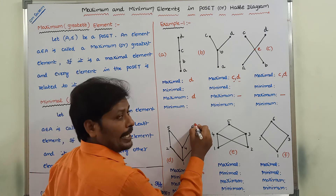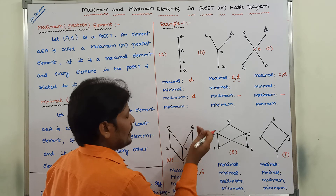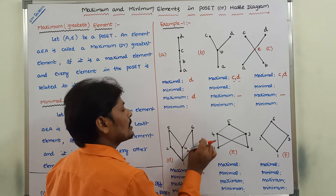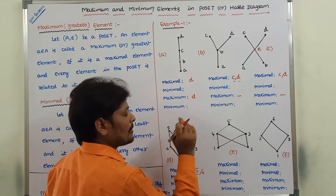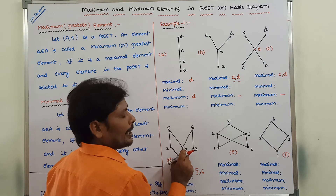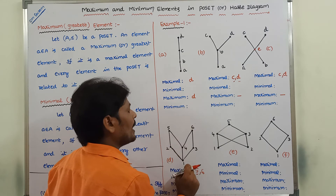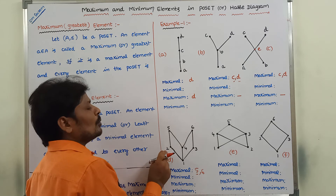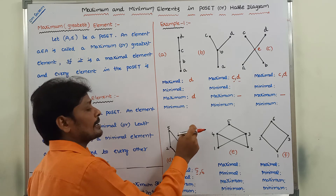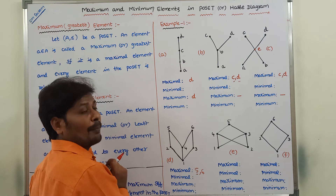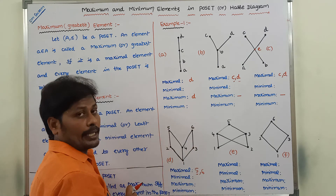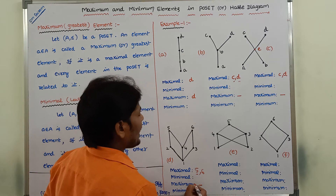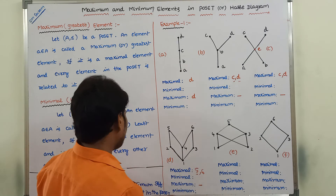Now consider element 6: 3 is related with 6, 1 is related with 3 and 3 relates with 6 so 1 is also related with 6 by the transitive property. Also 1 is related with 4 and 4 is related with 6, so 1 is also related with 6. But 2 is not related with 6, and 5 is not related with 6. Hence, we can say that 6 is not a maximum element. Therefore, the maximum element for that poset does not exist.